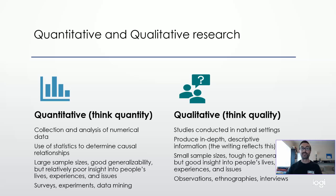Quantitative research uses statistics to determine causal relationships. Usually, quantitative studies have many variables, which are represented numerically, and researchers try to show relationships between the variables — especially which independent variables cause a change in the dependent variables. Research methods that are usually quantitative include surveys. Think about surveys that ask you to circle one through five — your response is coded numerically — as well as experiments and various studies using data mining and large amounts of quantitative data.